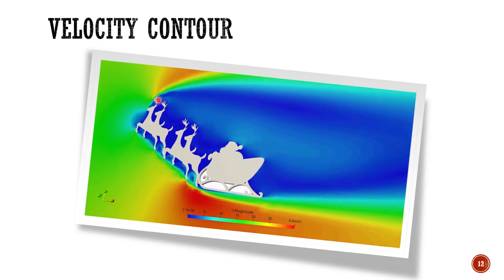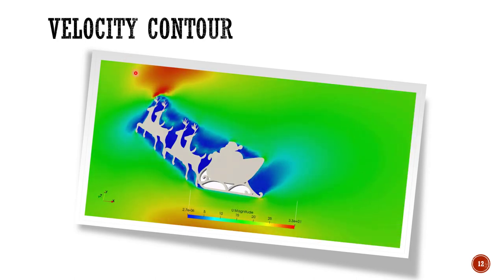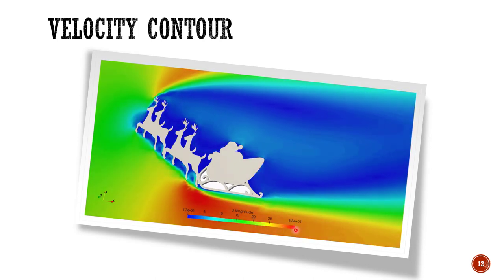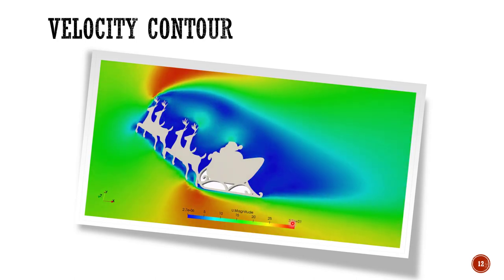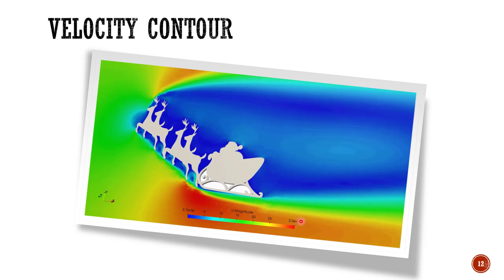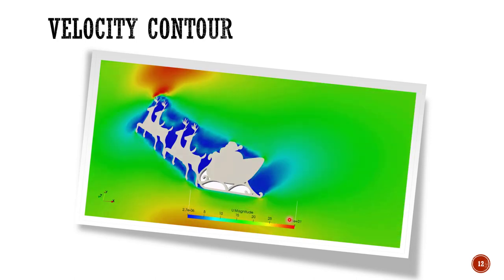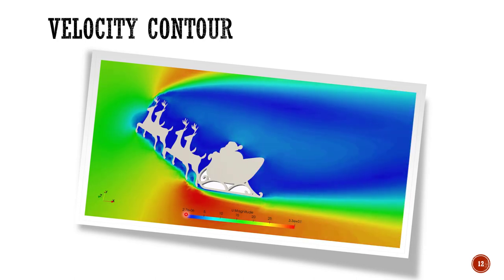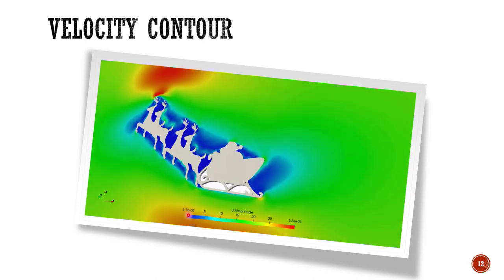These colors depict the value of velocity. Here you can see that we have a legend scale. The maximum value of legend scale is 3.3e raised to 1, that means 3.3 into 10 raised to 1, that means 33 meters per second. And the blue color denotes a value which is very small, that is almost zero.